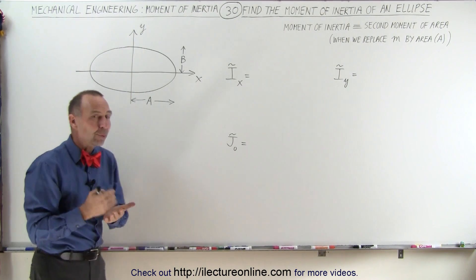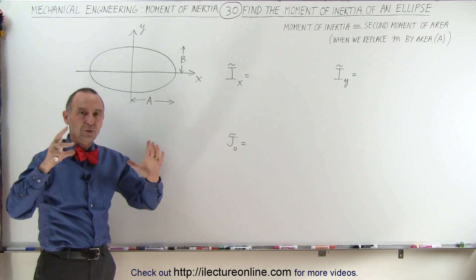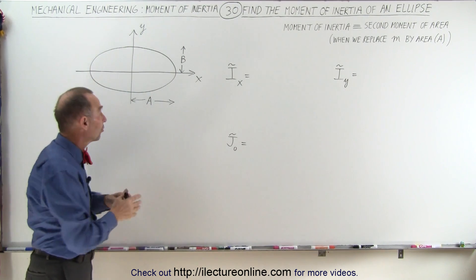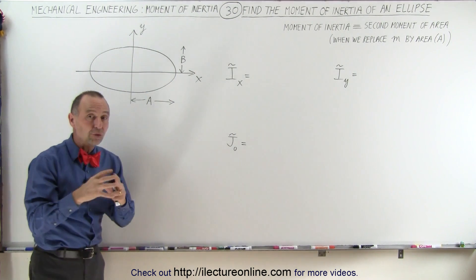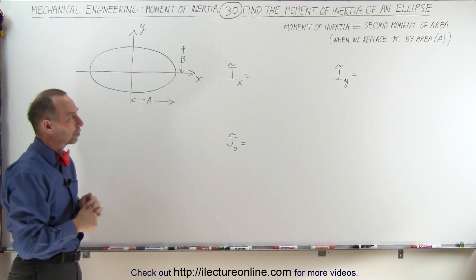Now we also have to realize that if we take the ellipse and reduce it back to a circle, such that a will equal b, then the equation should reduce down to the equations we got for the circle.